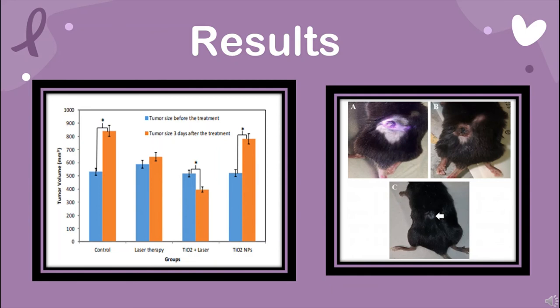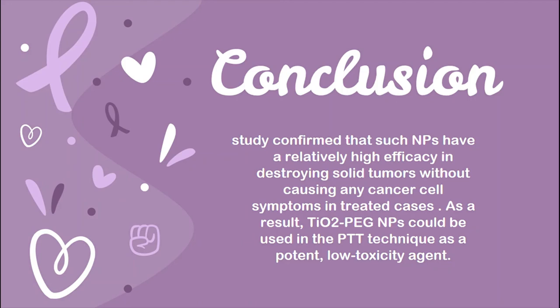A decrease in tumor volume in the titanium dioxide plus laser group is obvious. The average tumor volume in the control and titanium dioxide nanoparticle groups increased. The tumor sizes in the laser therapy group were not significantly different during treatment, but the tumors continued to grow. On the right side of the slide, we can see what happens after three months of follow-up in the titanium dioxide plus laser cases treated by PTT: A is before, B is three days after, and C is three months after treatment. The arrow indicates a change in hair color at the tumor site after three months. There was no evidence of melanoma cancer in titanium dioxide plus laser cases after three months of follow-up. The findings indicate that in the titanium dioxide plus laser group, not only did the tumor regress, but the tumor size also shrunk. The study confirmed that such nanoparticles have relatively high efficacy in destroying solid tumors without causing any adverse symptoms in treated cases.